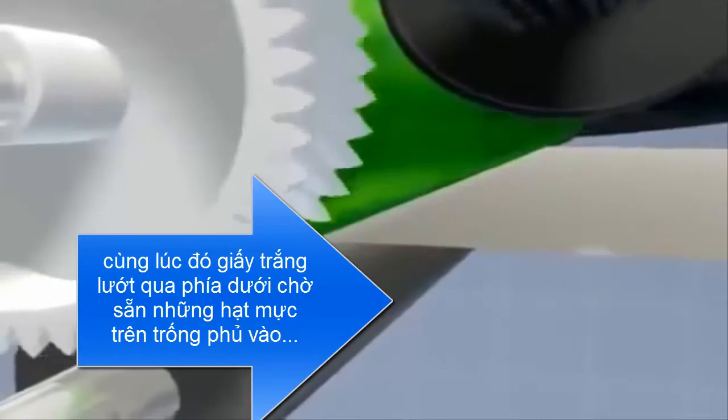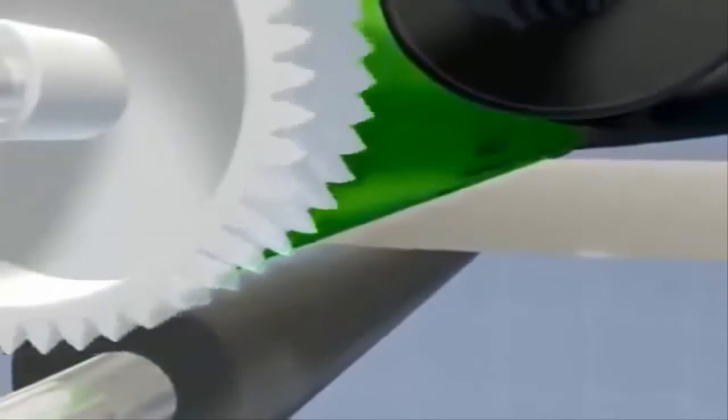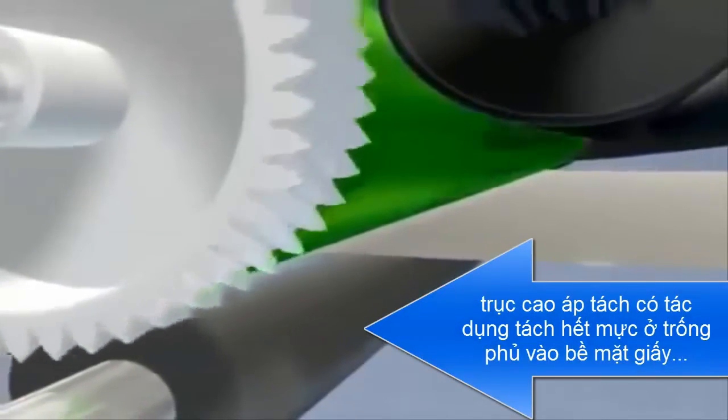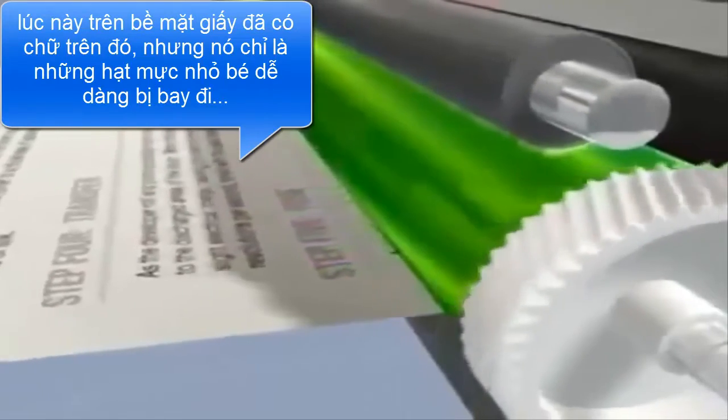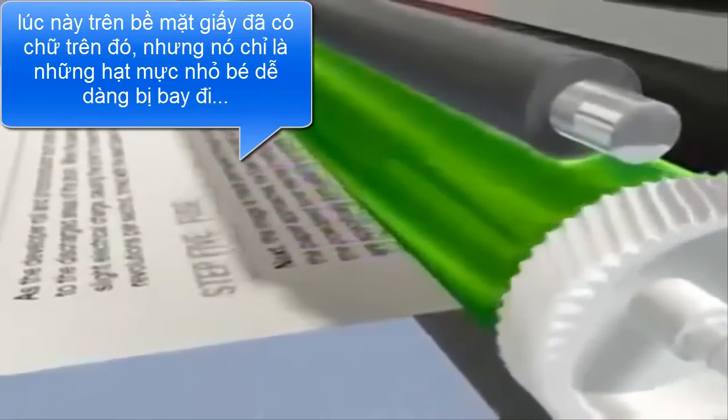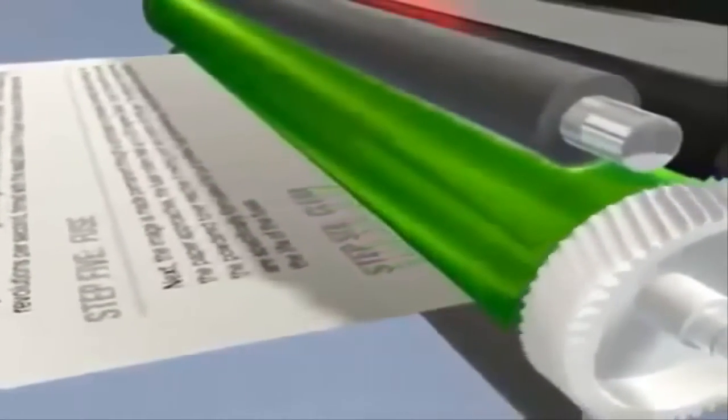When the paper passes under the drum, the transfer roller applies a slight electrical charge, causing the toner to move from the drum to the paper. The drum rotates up to two revolutions per second, timed with the exact speed of the paper, ensuring a complete image transfer.